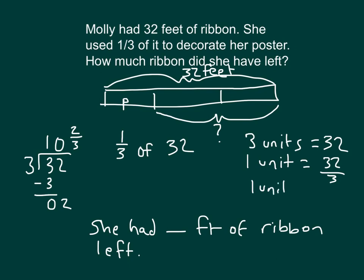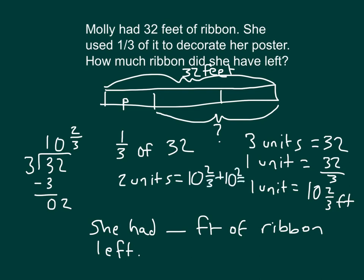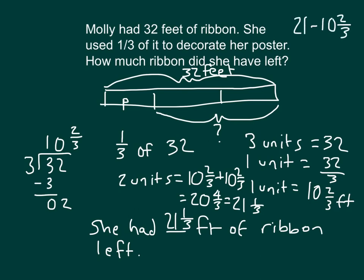We're looking at how many feet she had left, which is two units of ten and two thirds. So we have ten and two thirds times two — or we can add them together — which equals twenty and four thirds, equaling twenty-one and one third feet of ribbon left. We could also take 32 and subtract ten and two thirds, and we'd also end up with twenty-one and one third, as long as we did our subtraction correctly.